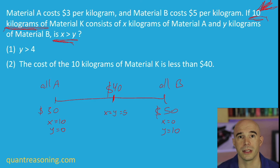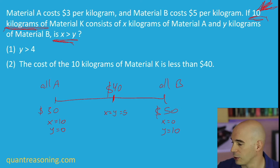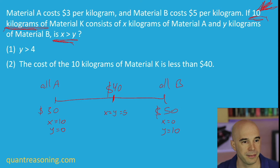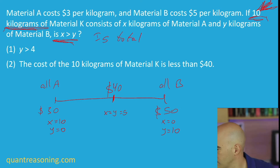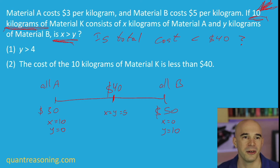Takeaway number one: don't rush to the statements. Takeaway number two is to really put yourself in the shoes of someone who would actually care whether X is greater than Y or not. Ask yourself: why do I care? What would be the impact in the context of the story they told me? We need to rephrase the question. 'Is X greater than Y?' — how would you rephrase that in the context of your number line? The answer is: is the total cost under $40?